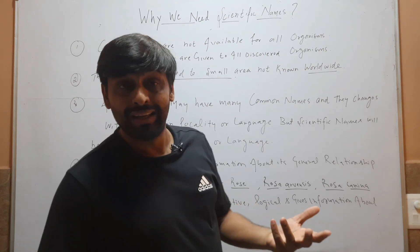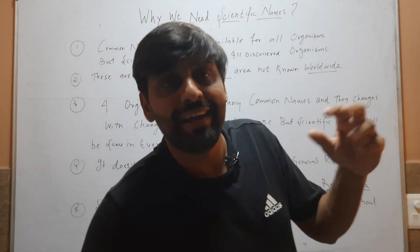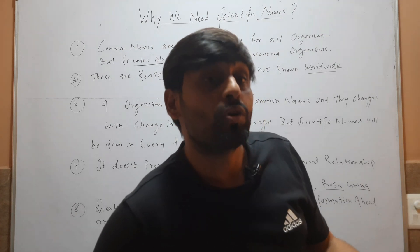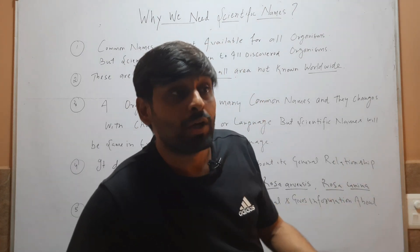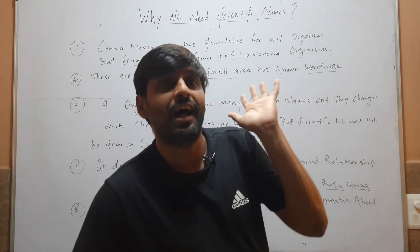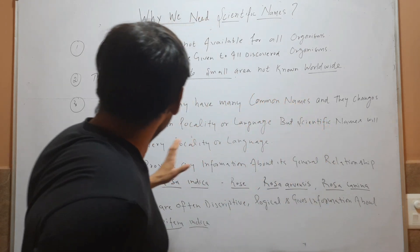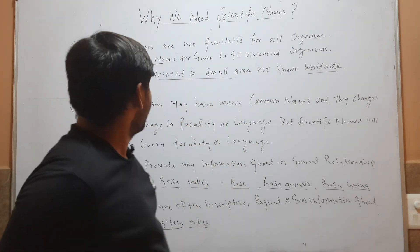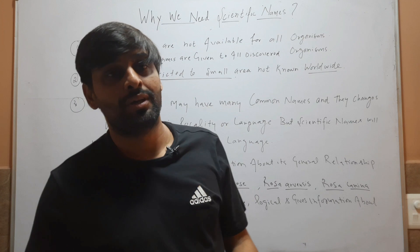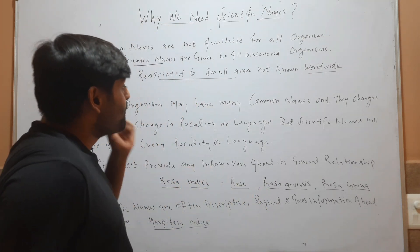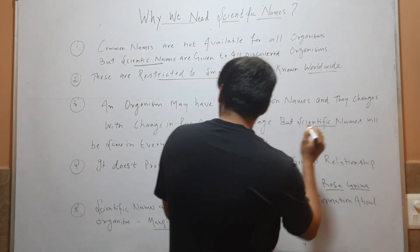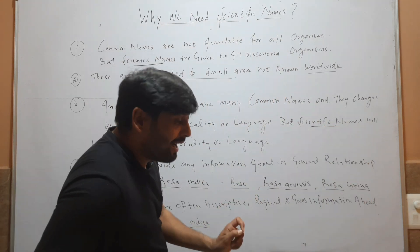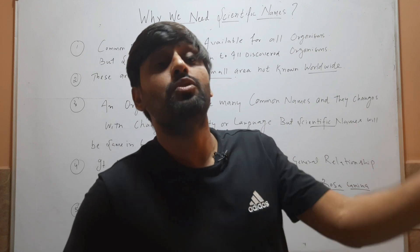The third reason is that an organism may have many common names. For example, when we call it Mangifera indica, in English it is called mango, in Hindi it is called aam, in Punjabi it is called aam, and in Sanskrit it is called amraphala. So you can see that the scientific name is one — Mangifera indica — but it has many common names. The common name changes with the change in locality or language, but the scientific name always remains the same in every language.